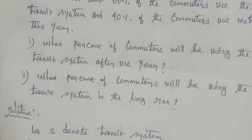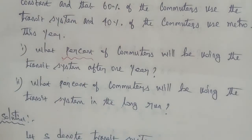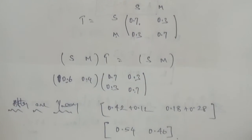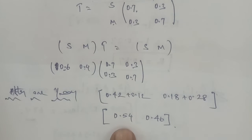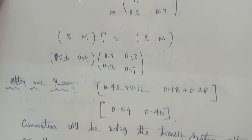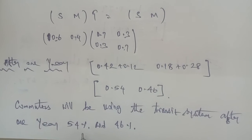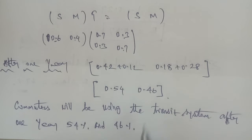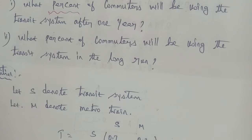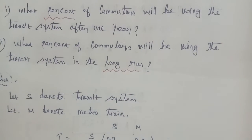Therefore, after 1 year, 54% of commuters will be using the transit system and 46% will be using the metro train. Next, what percentage of commuters will be using the transit system in the long run? For the long run, we use the equilibrium condition.